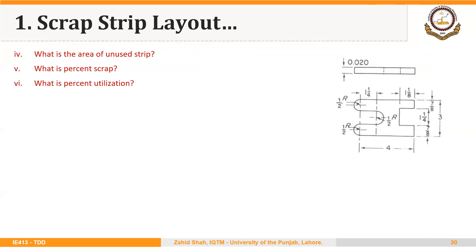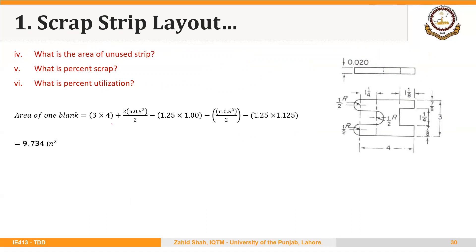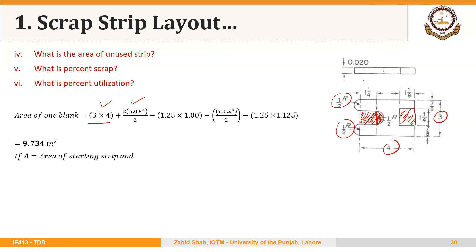Now, what is the area of unused strip, percent scrap, and percent utilization? The area is found in the same manner as in the previous wide run layout case. The unused area equals the area of the rectangle (3 × 4) plus the area of the two half-circles (π r² / 2 × 2), minus the area of the rectangle (1.25 × 1), minus the area of the semi-circle (π r² / 2), minus the area of the rectangle (1.25 × 1.125). Subtracting these three areas gives 9.734 square inches.